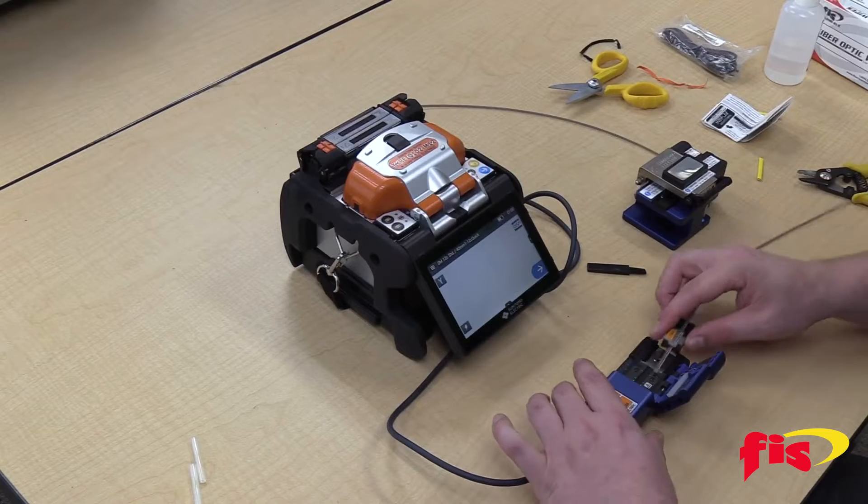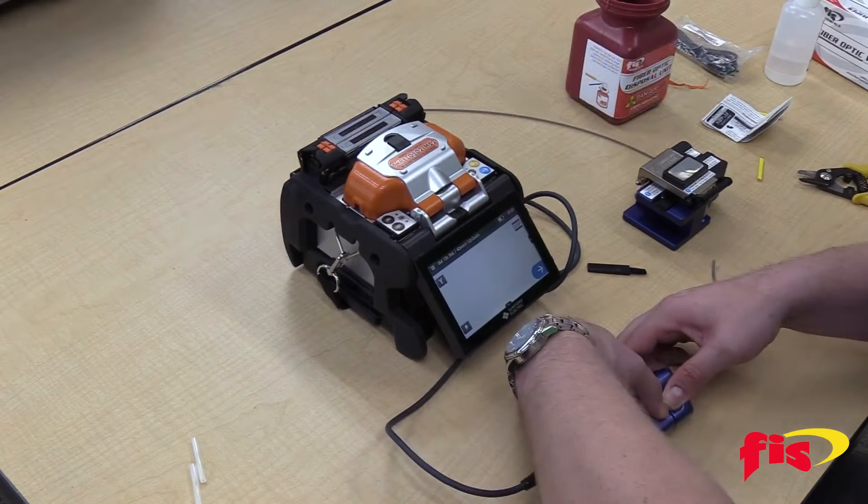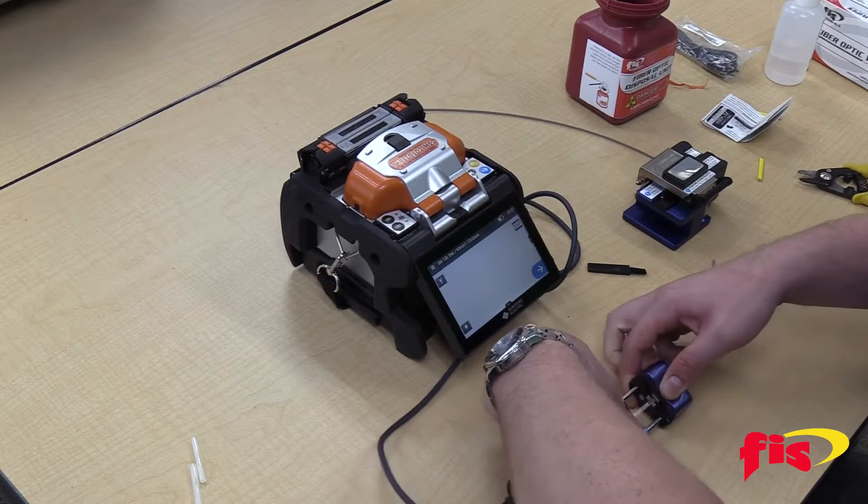We then insert it into our hot jacket stripper, close it down, let the heater melt the glue, and then pull it apart.